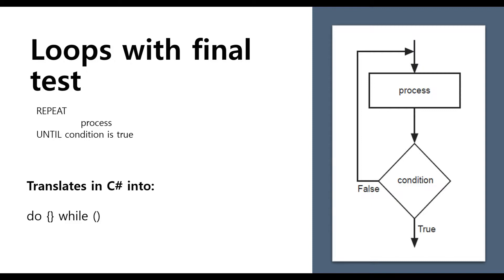In both loops with initial test and loops with final test, there is one important thing to take care of: we must make sure the condition will at some point be false. Otherwise we run into an infinite loop, which is the nightmare of all software developers. So when using while or do-while loops, we have to make sure we change the components that influence the condition's outcome — whether we evaluate at the beginning or at the end.